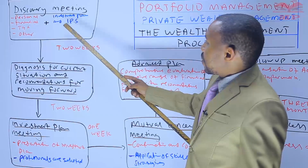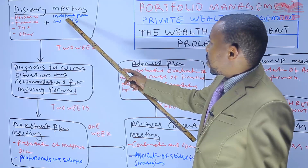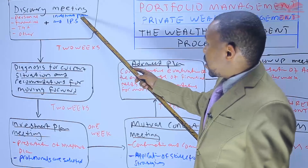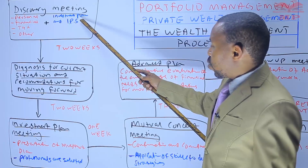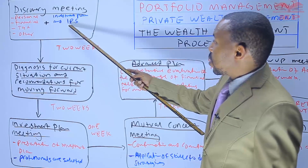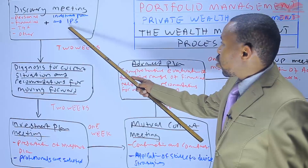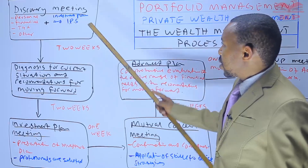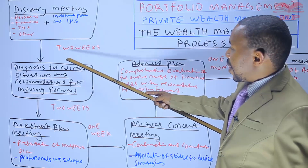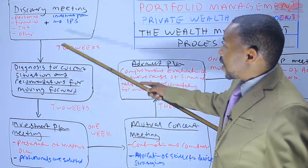On this other side, in terms of the fact-finding mission, we will be required to devise an investment plan — the investment plan that is attuned to the client's best needs. That means you need to develop the IPS, the investment policy statement. The investment policy statement talks about objectives on one side and constraints on the other. This process between the discovery meeting and diagnosis for the current situation and recommendations for moving forward takes two weeks.